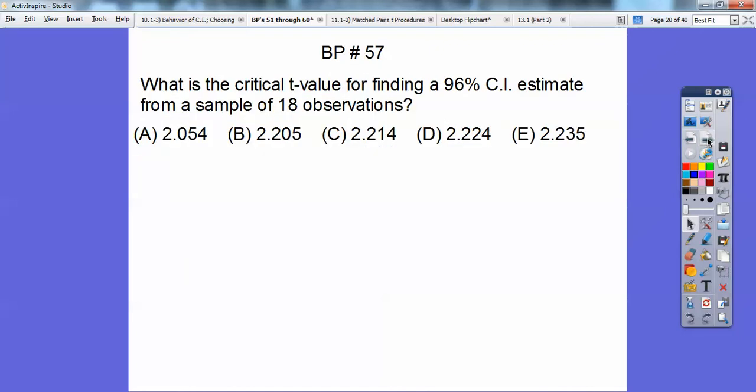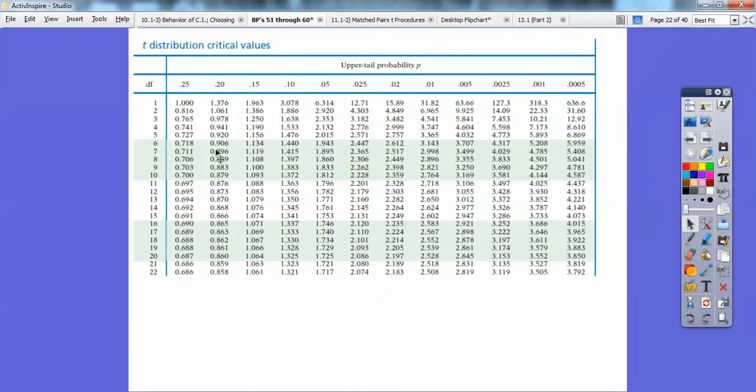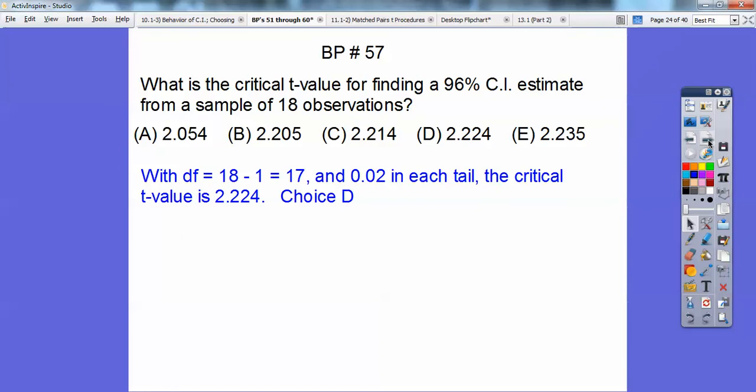All right, so what is the critical t-value for finding a 96% confidence interval estimate from a sample of 18 observations? All right, remember, if I drew the bell-shaped curve, and 96% was in the middle, they would have 2% on each side because there's 4% left over. So with 18, your degrees of freedom is 18 minus 1, which is 17, and so 2% on each tail. So I'm going to look on my t-table at 2% on each tail. So here's my t-distribution. I'm going to go down to my degrees of freedom of 17, and I'm going to go over here at the 2%, and where those guys line up, that would be my t-score right there. So that one right there, 2.224. So that would have been choice D.